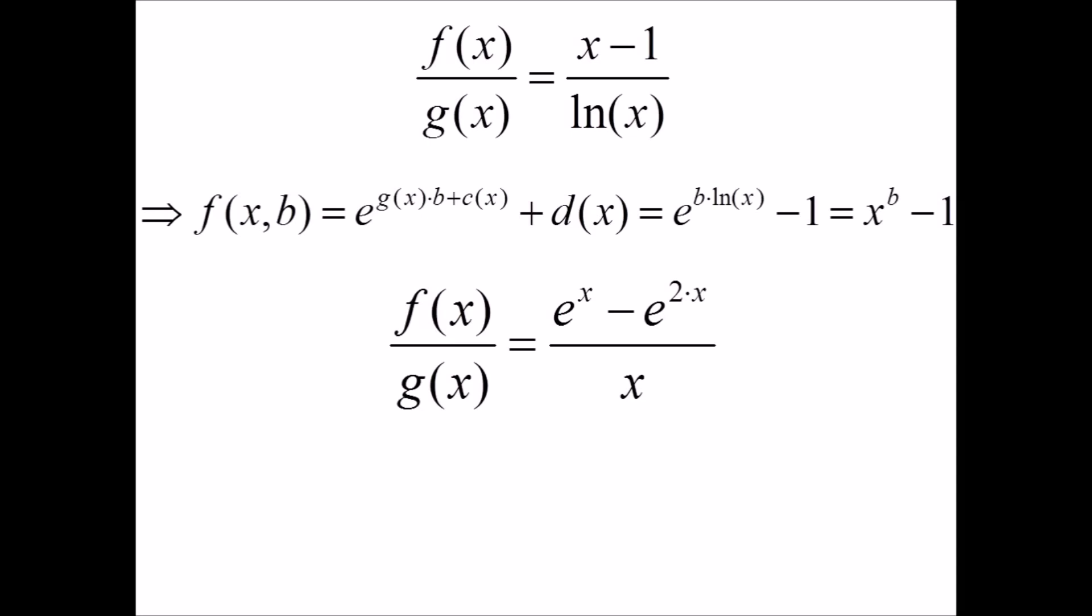As for a second example, if the numerator is e to the x minus e to the power of 2x and the denominator is x, then we obtain f of x of b equal to e to the power of b times x minus e to the power of 2 times x. Once again, this function is a lot easier to integrate than the original one.